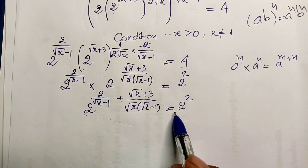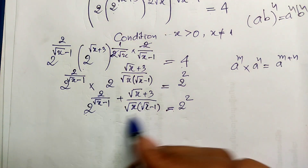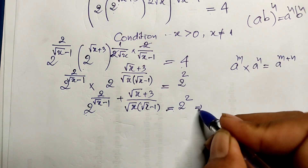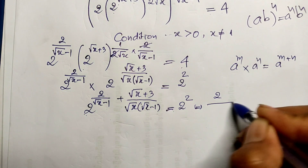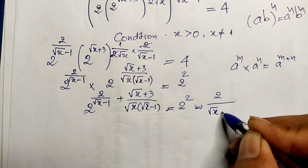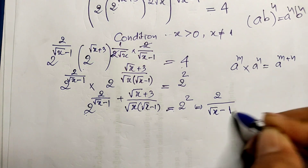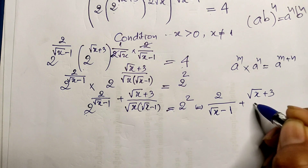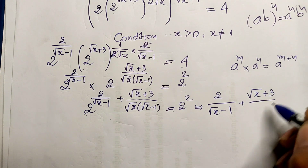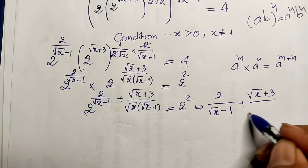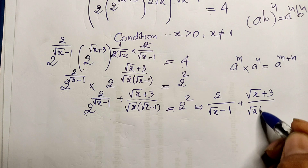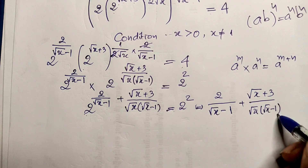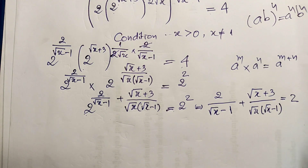Since the base is 2 on both sides, we can equate the exponents. We get: 2 divided by (square root of h minus 1) plus (square root of h plus 3) divided by square root of h, multiplied by (square root of h minus 1), equals 2.